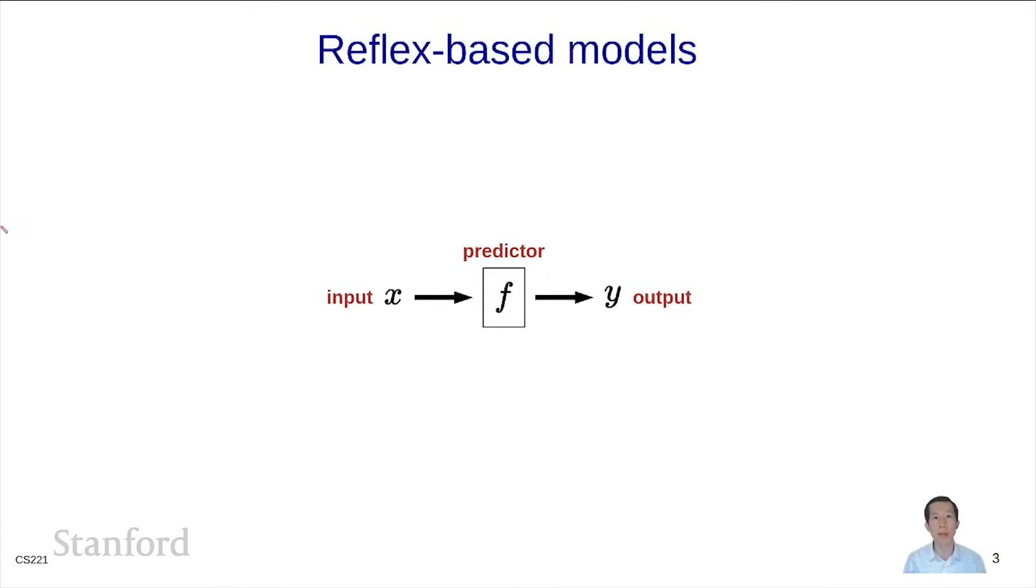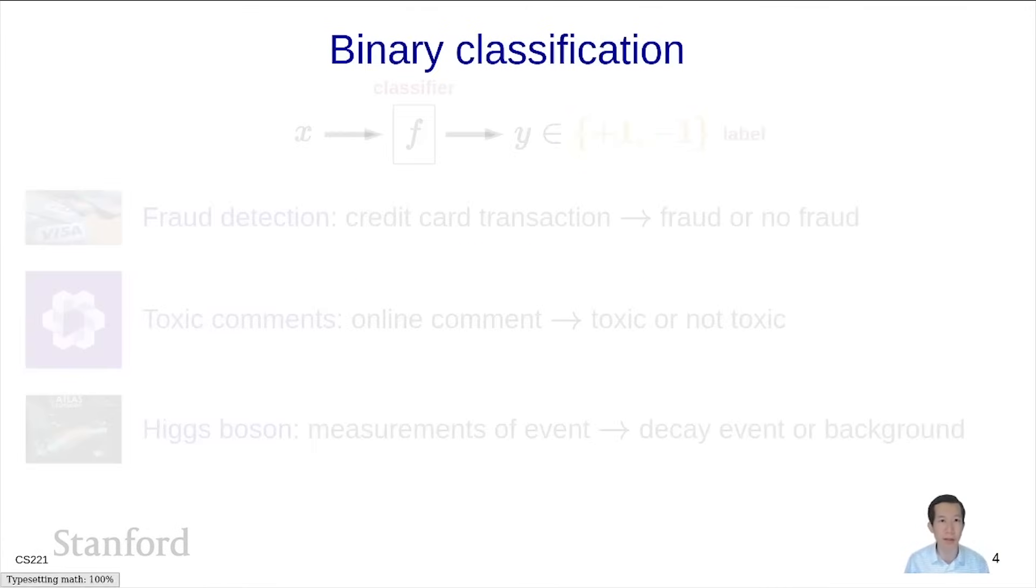We'll consider two common cases of prediction tasks. The first is binary classification. In binary classification, the predictor is also called a classifier, and the output y is called a label. That label can either be plus 1 for the positive class or minus 1 for the negative class.